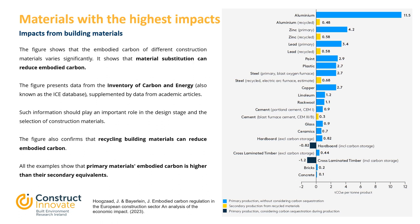The figure confirms that recycling building materials can reduce embodied carbon. All the examples show that primary materials' embodied carbon is higher than their secondary equivalents.